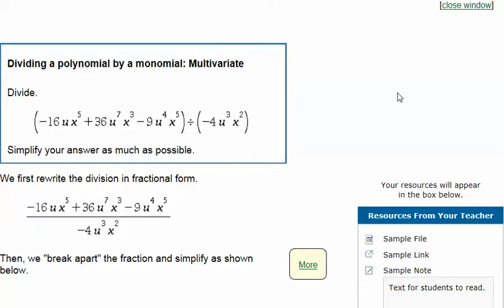The name of this topic is dividing a polynomial by a monomial multivariate. We're asked to divide this quantity by this quantity and simplify our answer as much as possible.